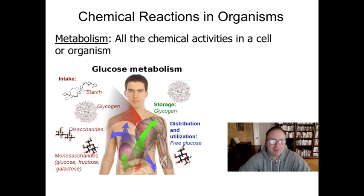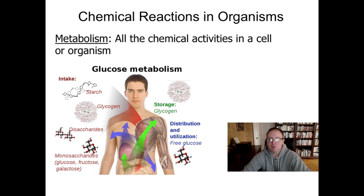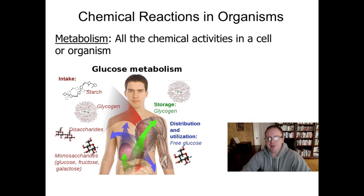All right, we're going to wrap up the thermodynamics unit by looking at typical chemical reactions that occur in organisms. In the early screencast for this unit, we simply defined energy and gave a rationale for why organisms require a source of energy with the first and second law of thermodynamics. The second screencast looked at exothermic and endothermic reactions and the difference between a catalyzed and uncatalyzed reaction. In screencast three, we studied enzymes and how enzymes work. So this screencast is going to bring all of those ideas together and look at the major kinds of chemical reactions that occur in organisms.